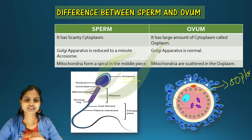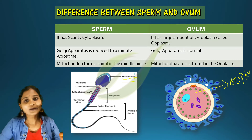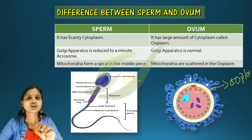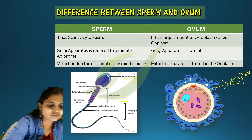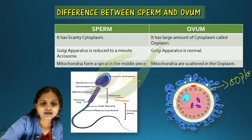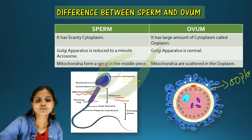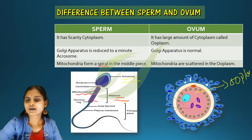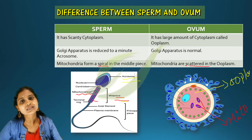Regarding mitochondria — an important point — in the sperm, mitochondria are present in the middle piece in a spiral shape. Whereas in the case of ovum, the mitochondria are scattered throughout the cytoplasm.